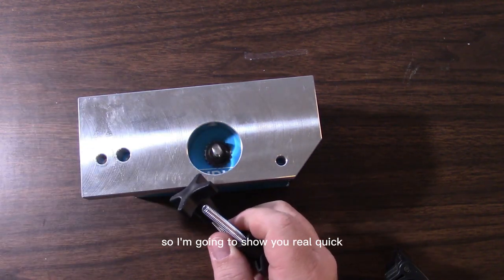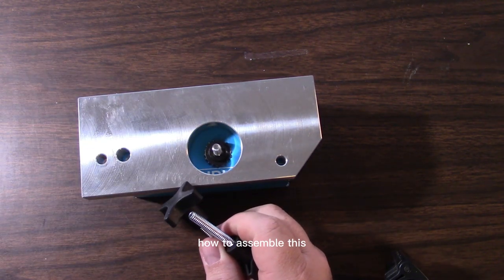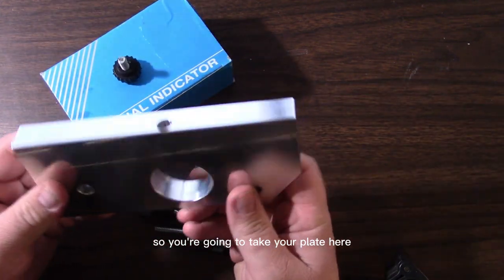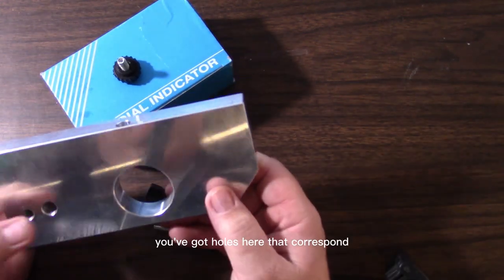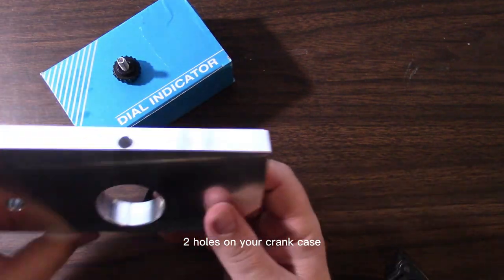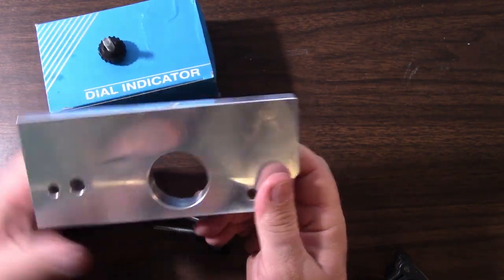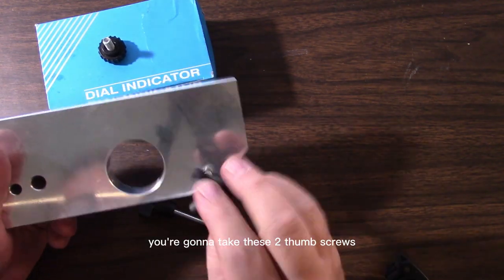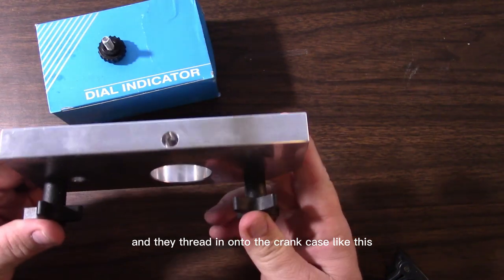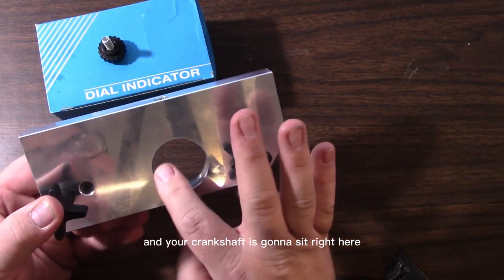You also have this thumb screw here, so I'm going to show you real quick how to assemble this. You're going to take your plate here. You've got holes here that correspond to holes on your crankcase. You're going to take these two thumb screws.